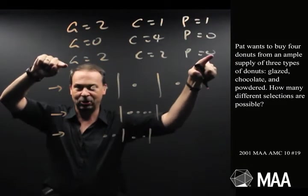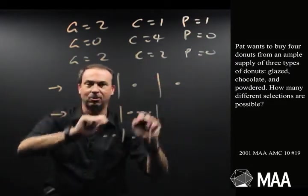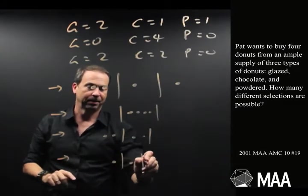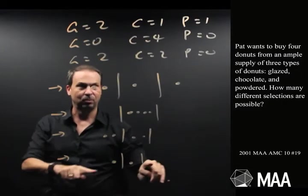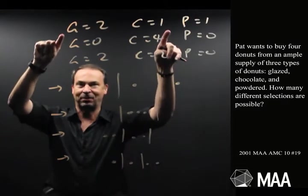So to me, every solution, every possibility is actually a picture. It's a picture of, what, four dots and two bars. Now just to make sure, I'll draw the picture first. Maybe I'll draw this picture. And what's that a solution to? Well that says one glazed, one chocolate, two powdered. So every picture is a solution, every solution is a picture.